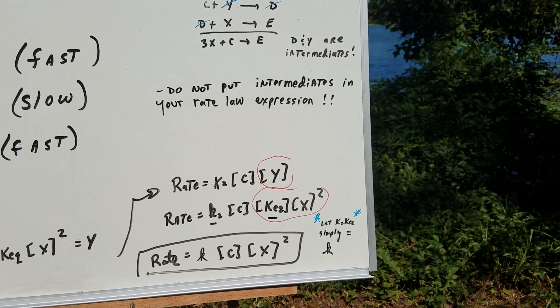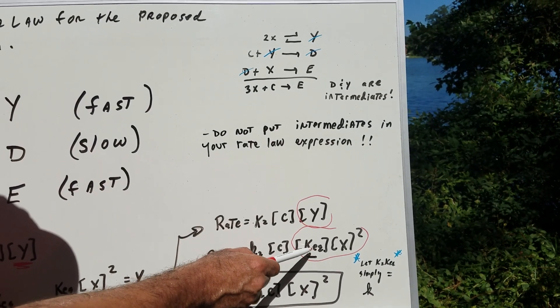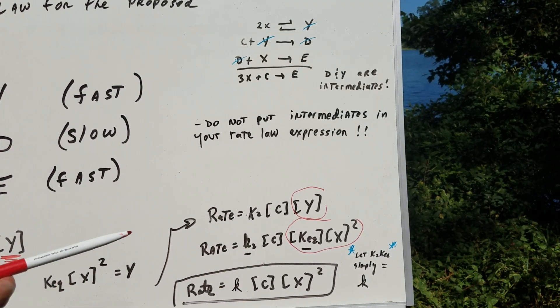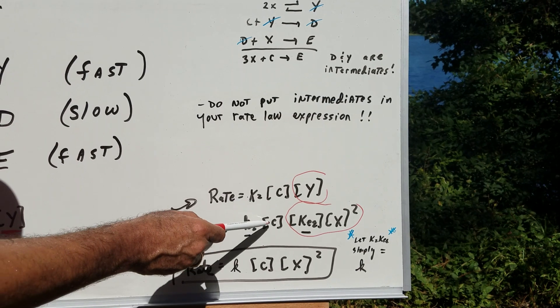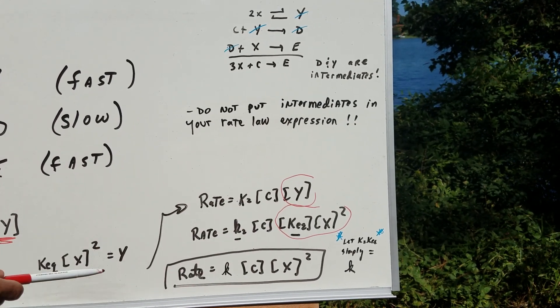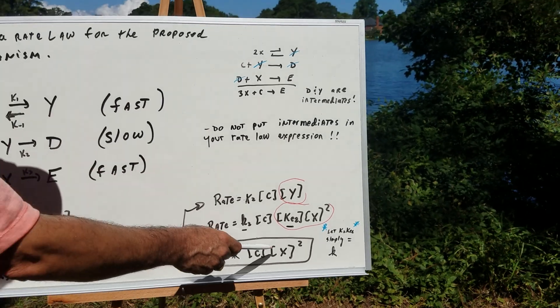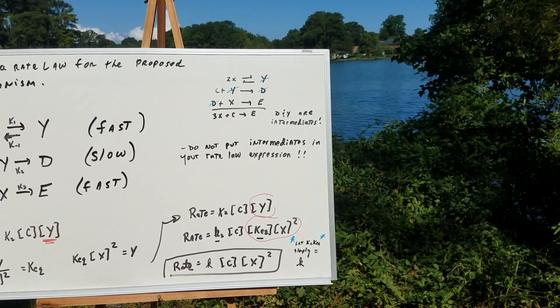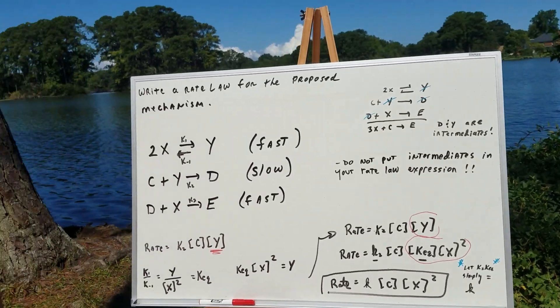Now what I'm going to do is clean everything up. I'm going to let the K2 times the KEQ simply equal K. So I'm going to substitute these two terms for K. We have the C, we have the X, and we square it. So notice now we have the two reactants that are in the rate law. Notice the final reaction has nothing to do with the stoichiometry. The final rate law expression was determined experimentally.